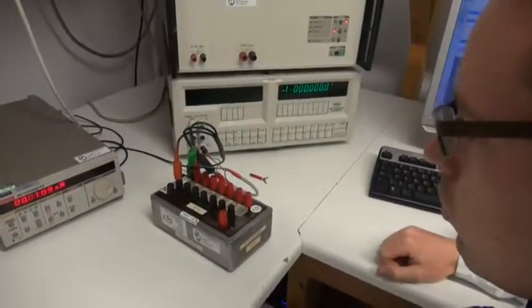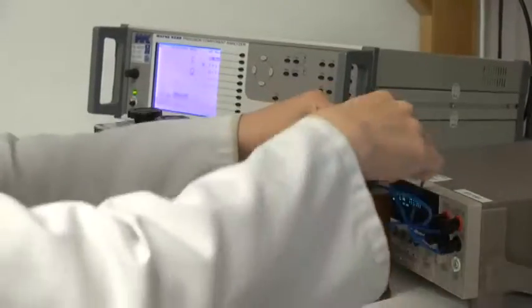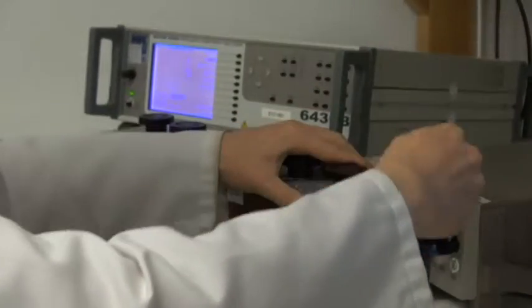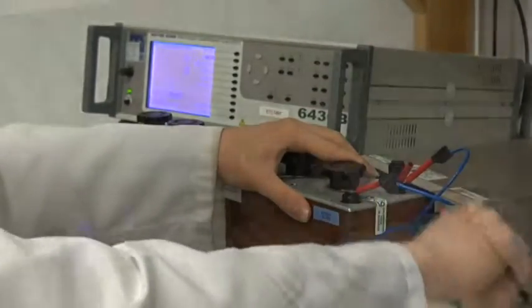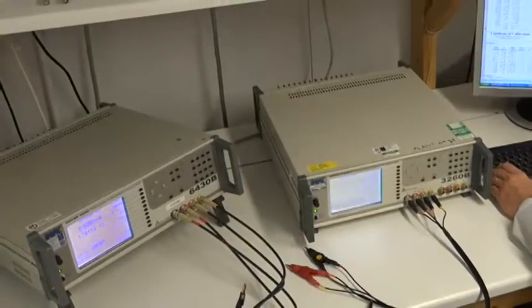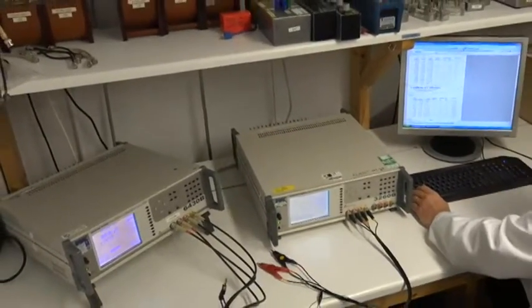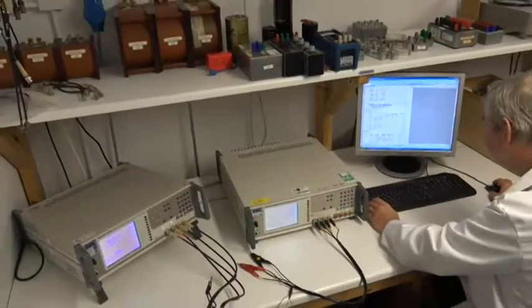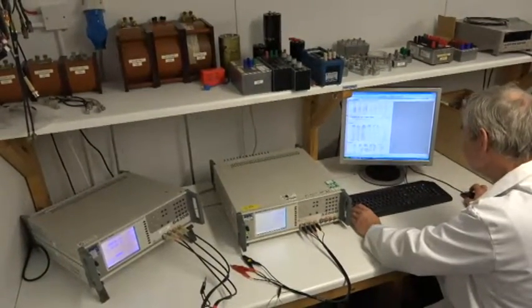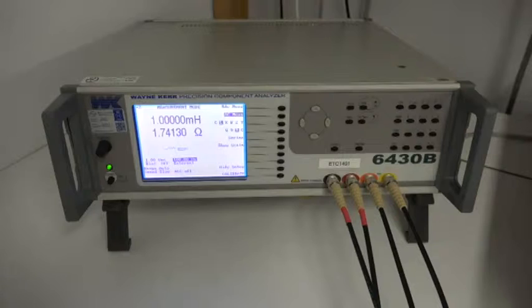We can measure voltages from nanovolts up to 30,000 volts and currents from femto amps up to 100 amps, from nano ohms up to tera ohms. We also measure capacitance and inductance with measurement traceability through our reference inductors and capacitors and a set of measurement bridges.